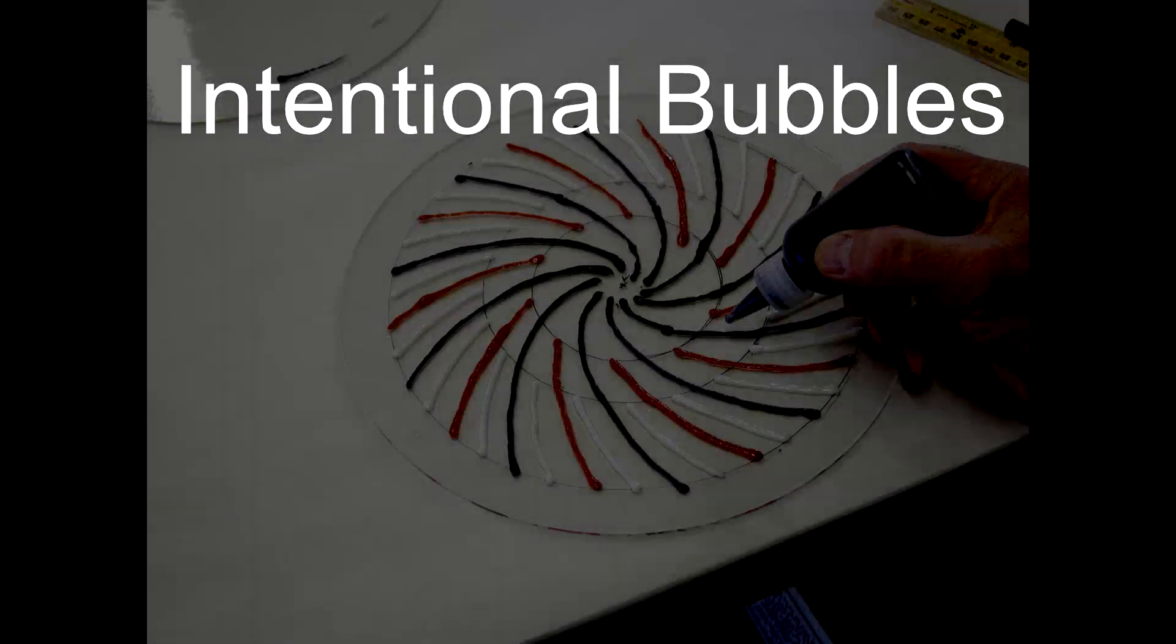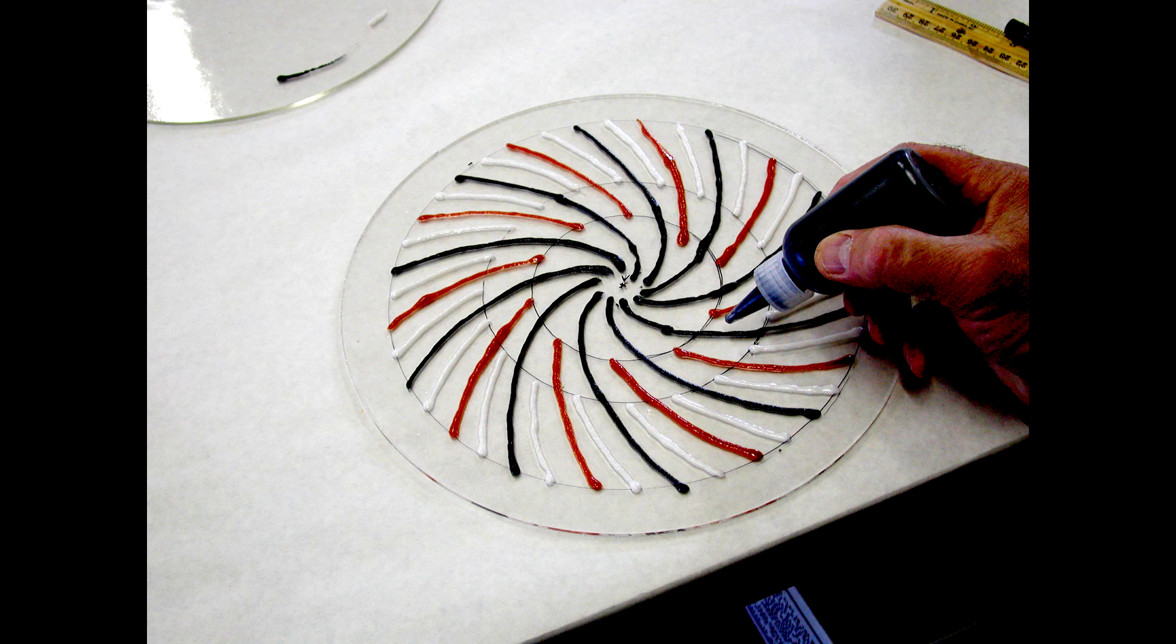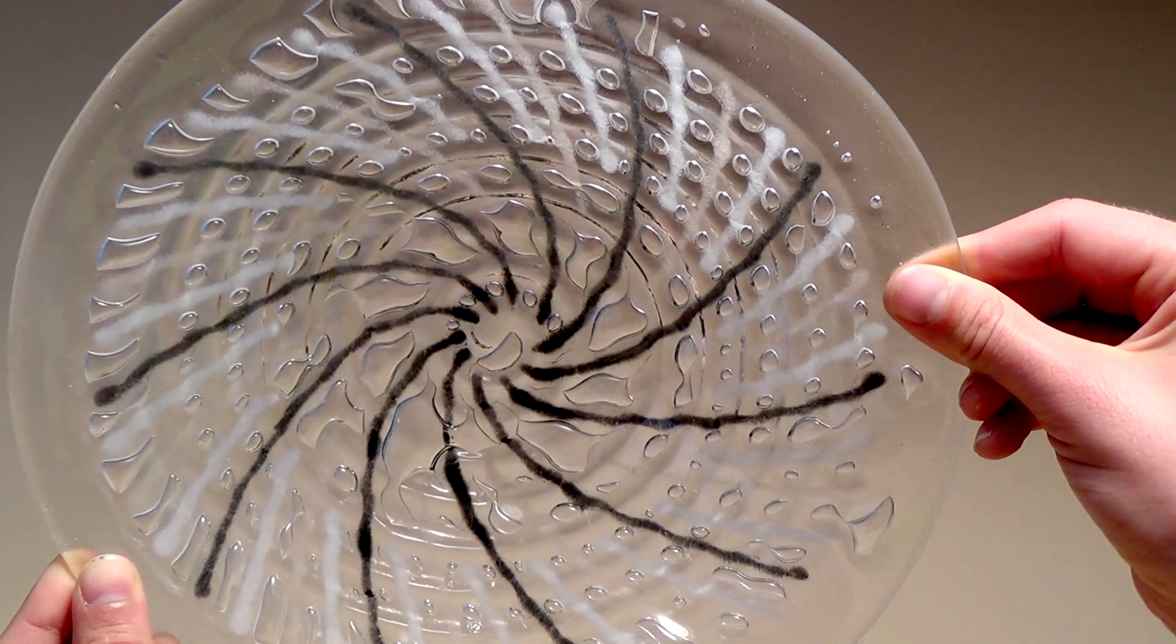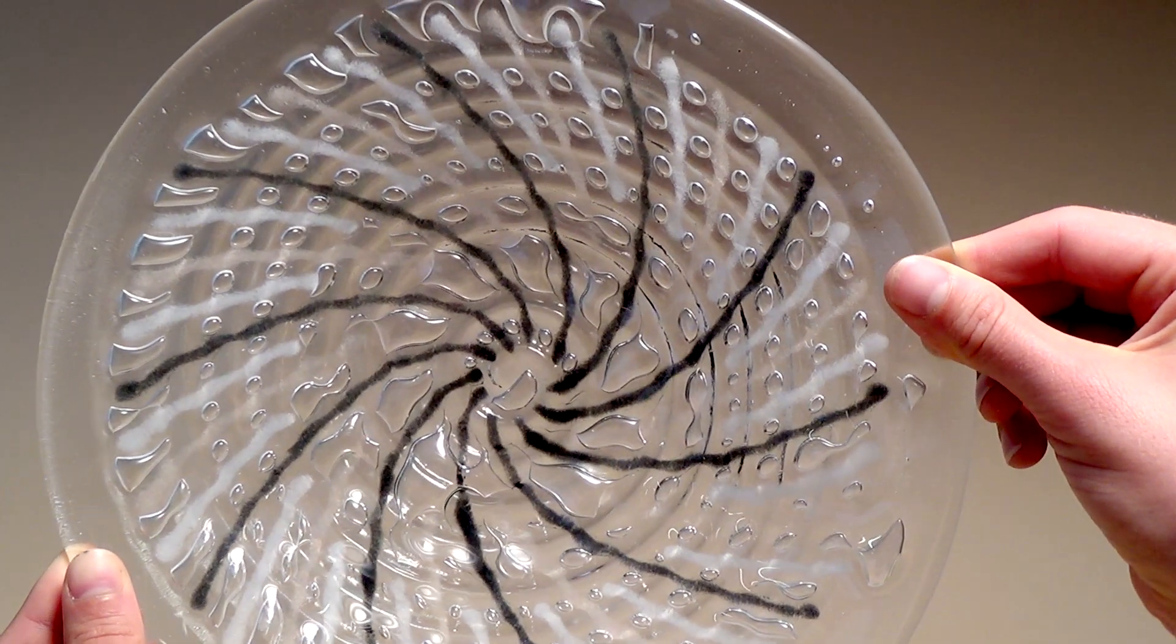There are several ways to control the bubble patterns in between layers of glass. Applying a series of lines to the base glass using frit mixed with liquid stringer medium will help form little cells that will each contain an air bubble.